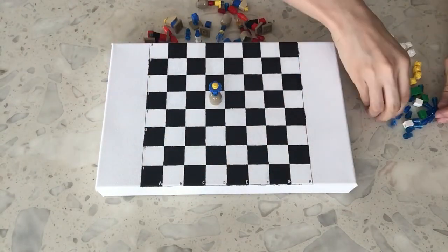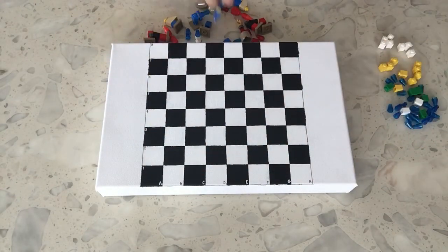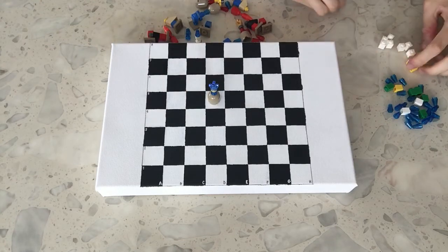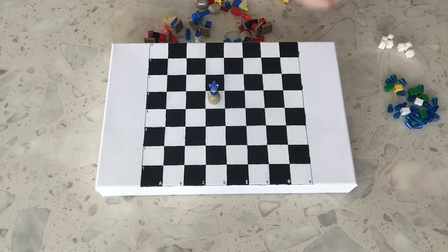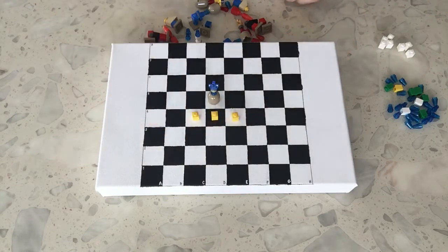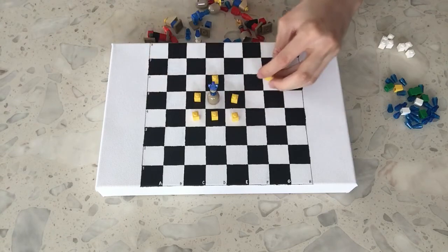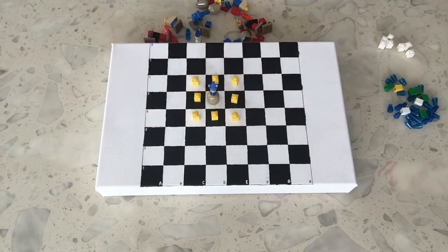Last of all, the king can move one space at a time in any direction. The king must never move himself into check, otherwise the game is lost.